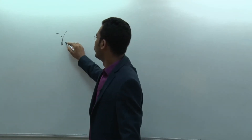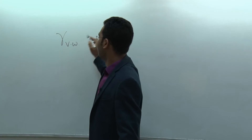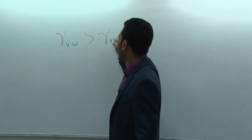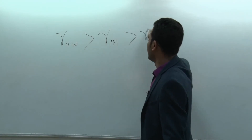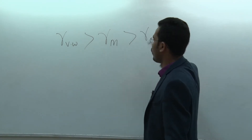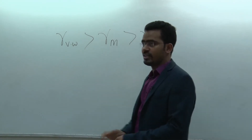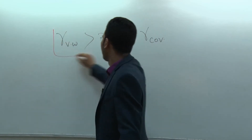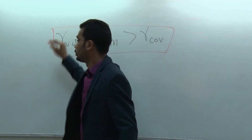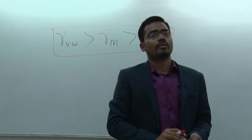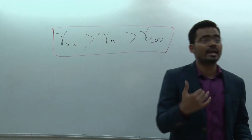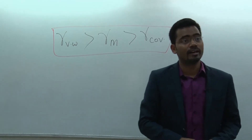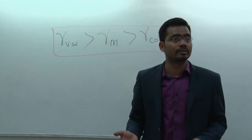For the same element, R of Van der Waals is greater than R of metallic, which is greater than R of covalent. Covalent radius is the shortest radius for a given element. This is the reason noble gases have a higher atomic radius in the periodic table, because they have only Van der Waals radius.